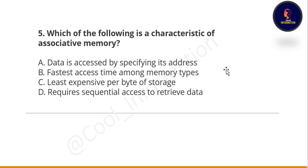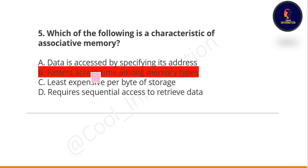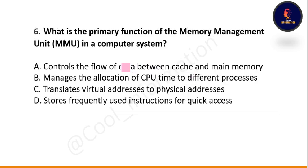Next question: which of the following is a characteristic of associative memory? Option A: data is accessed by specifying its address. Option B: fastest access time among memory types. Option C: least expensive per byte of storage. Option D: requires sequential access to retrieve data. The correct option is B — fastest access time among memory types.